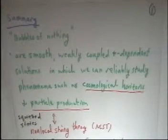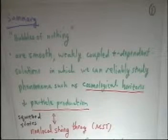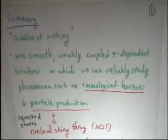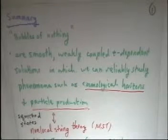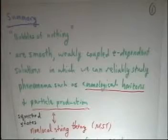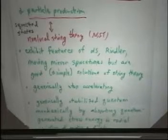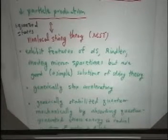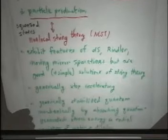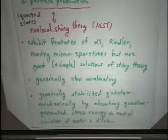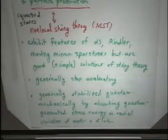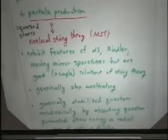This talk will be about an interesting class of time-dependent backgrounds, which are known as bubbles of nothing. Which are smooth, weakly coupled solutions in which we can reliably access certain interesting phenomena in time dependence, in particular issues of cosmological horizons and particle production. These spaces are very interesting, even at the level of general relativity, because they exhibit features of de Sitter space, Rindler space, and moving mirror systems, while being simple and smooth solutions of general relativity and string theory. As we go, we'll uncover some novel, or at least newly realized, features of the dynamics of these bubbles, these space-times.